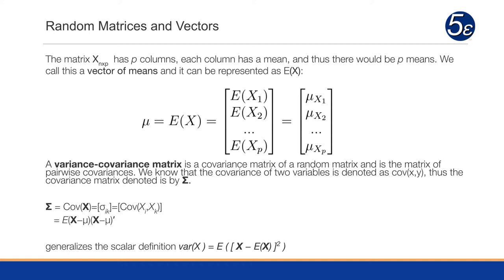A variance-covariance matrix is a covariance matrix of the random matrix. It's a matrix of pairwise covariances — for each pair of columns, we compute a covariance. On the diagonal, we end up with the variable's covariance with itself, which is the variance. The covariance of two variables is listed as the covariance of X and Y, and our covariance matrix is denoted by sigma.